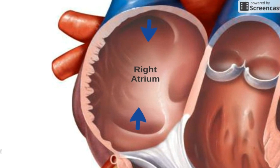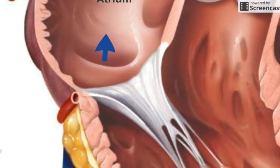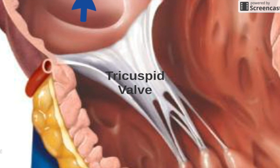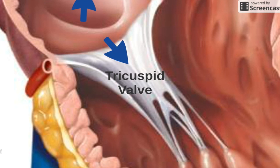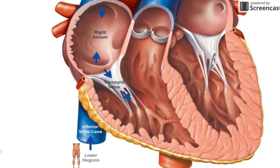Once the blood is collected in the right atrium, it will move through a valve called the tricuspid valve. The tricuspid valve is like a gate that is either open or closed depending on the phase of our heartbeat. When it is closed, blood is trapped in the right atrium. When it opens, blood flows past the tricuspid valve and into the right ventricle. When blood is in the right ventricle, the tricuspid valve slams shut so that the blood is trapped in there.